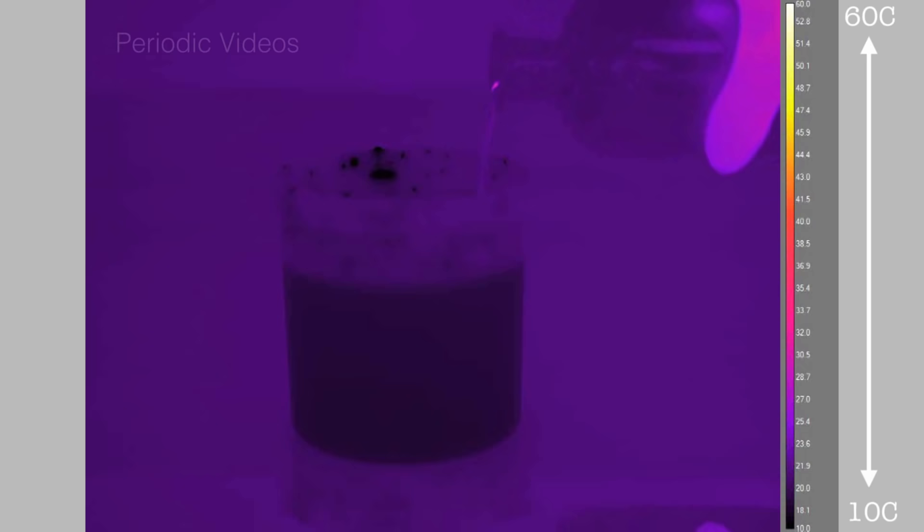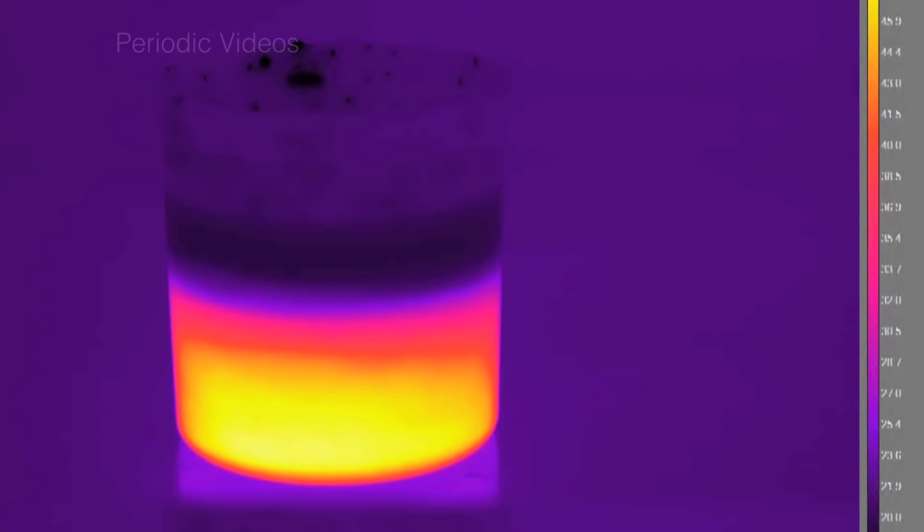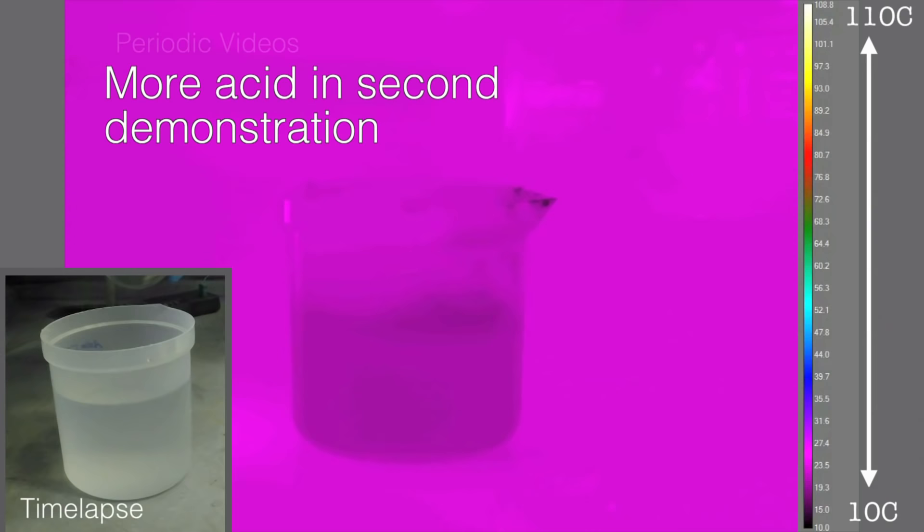The first thing that's interesting is that the acid layer gets really hot. But the next thing that's interesting is that you know that hot things rise, but the acid layer stays hot and the water on top stays relatively cold. And the reason for this is that the acid is far denser than the water. So even with the heating, it's not light enough to convect up.